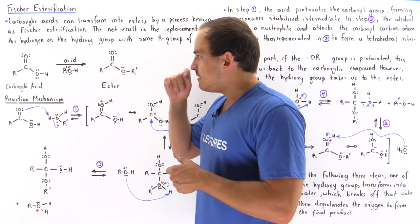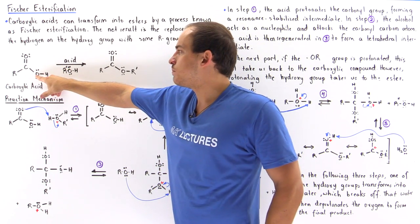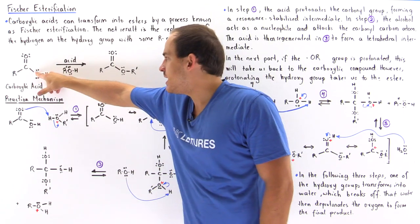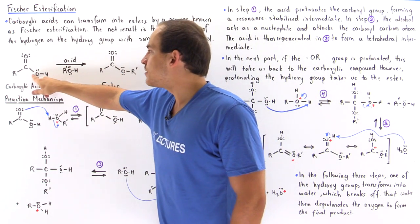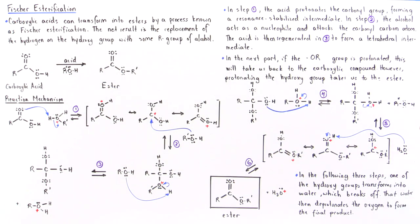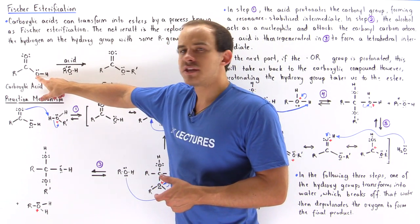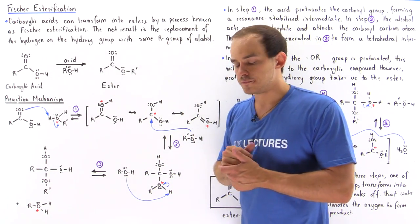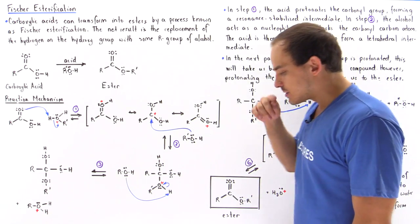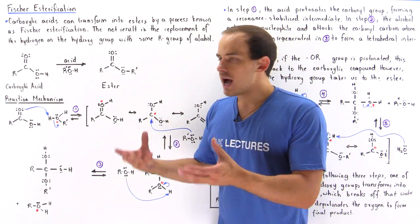One thing to keep in mind is that not only do we replace the H atom — we also actually replace the oxygen. The oxygen in the ester and the original carbonyl oxygen are two different oxygens. The oxygen in the product comes from the alcohol, while the original oxygen departs in step five when the water molecule is kicked off. So technically, we replace not only the H atom but also the oxygen with a completely different oxygen from the alcohol molecule. The Fischer esterification is the process by which we transform a carboxylic acid into an ester using an acid-catalyzed reaction.